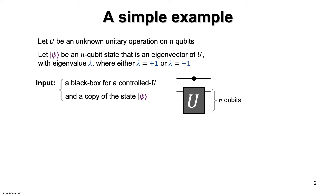Our goal is to determine the eigenvalue lambda — that is, whether lambda is plus 1 or minus 1. It turns out that we can solve this problem by making just one single query to the controlled-U gate.